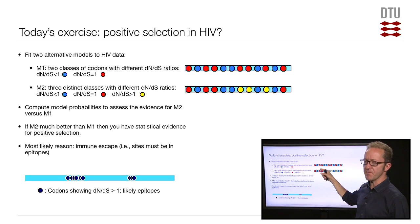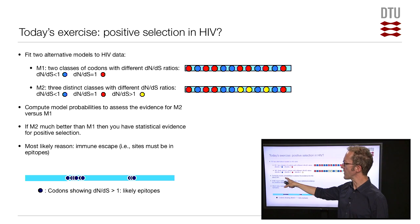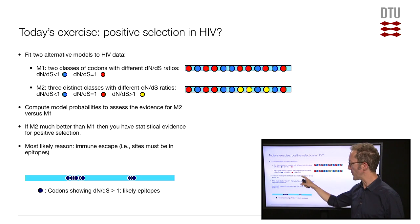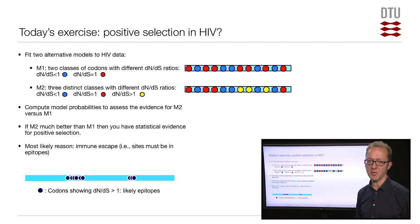Once we've done that, we have now the parameter estimates and the likelihoods for each of these two different models. We know how many parameters there are. So we can now use, for instance, the AIC information criterion to compute model probabilities for these two models and see which of them is better. If model 2, the one with the three classes, is much better than model 1, then we actually have statistical evidence for positive selection.